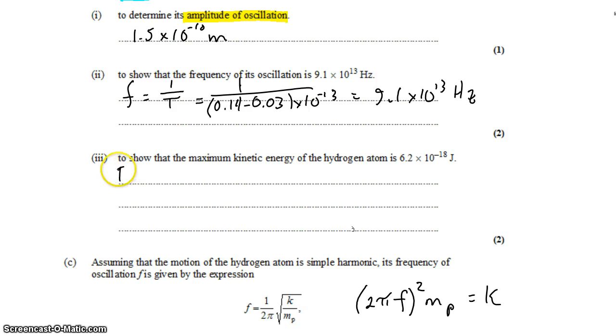For this, we need to use our formula for kinetic energy in simple harmonic motion. That's one-half m omega squared x0 squared. x0 refers to the amplitude, the maximum displacement of the oscillation, m is the mass of the oscillator, and omega is the angular frequency. We know the mass and we know the amplitude.